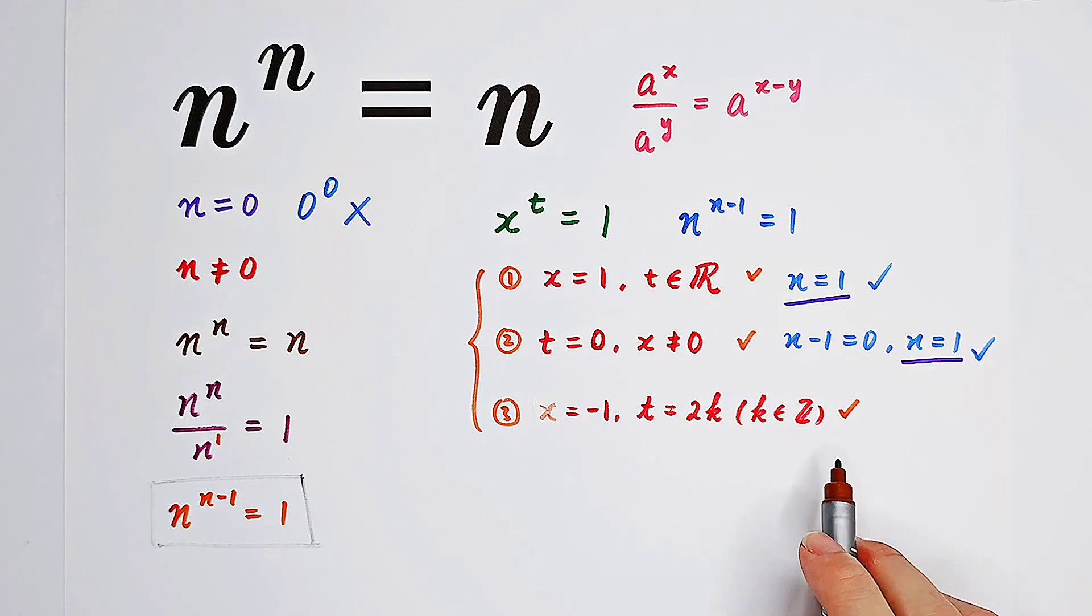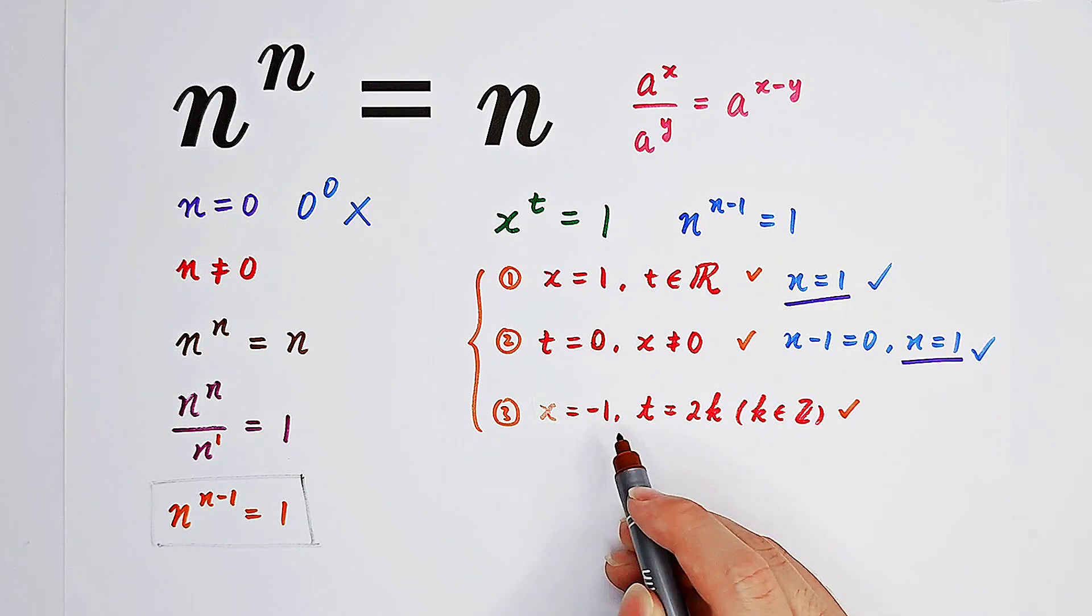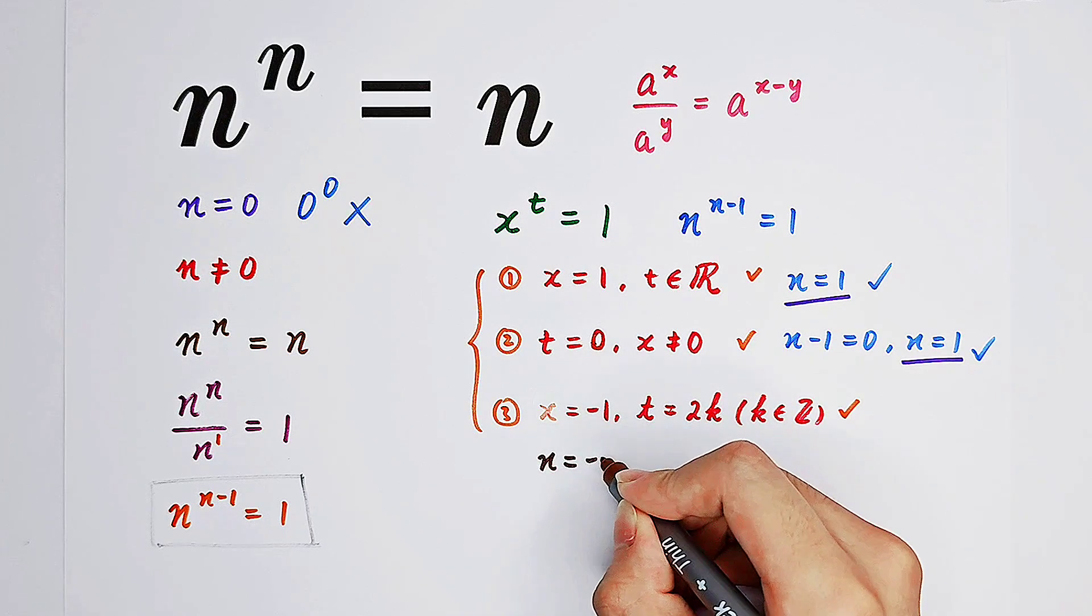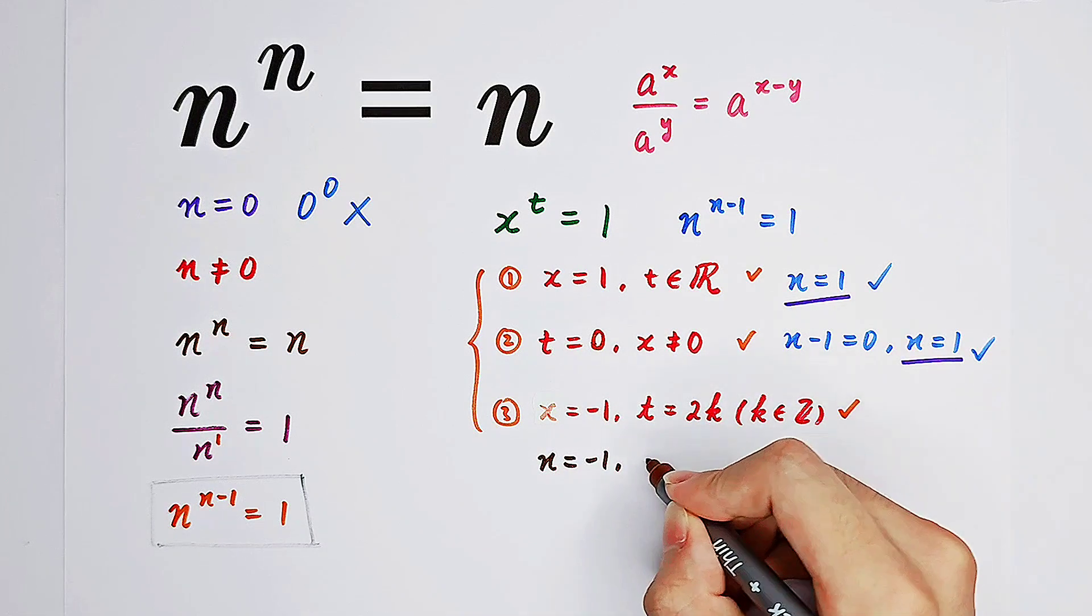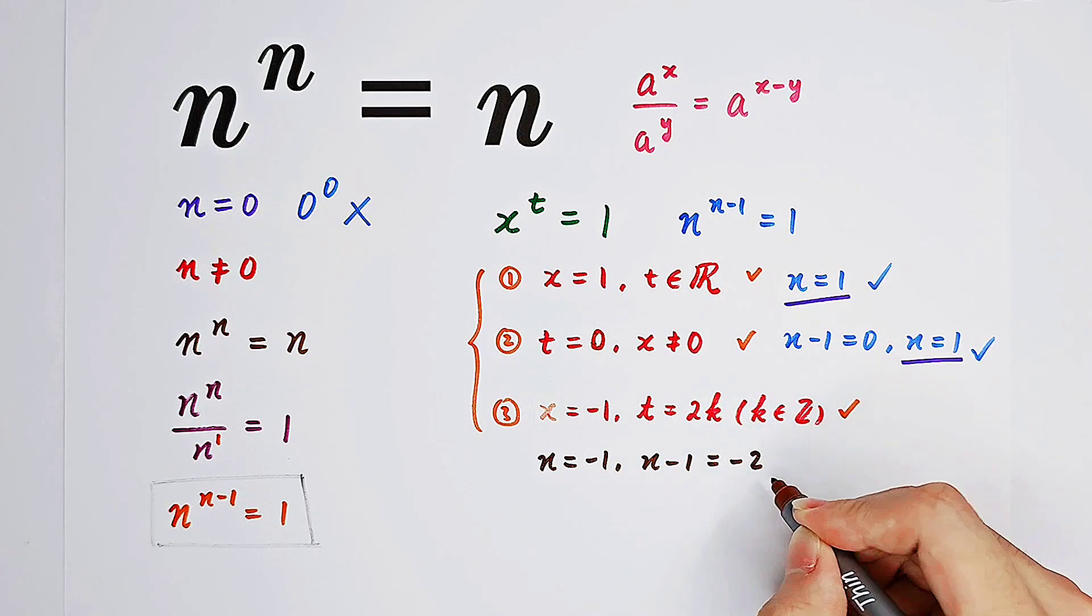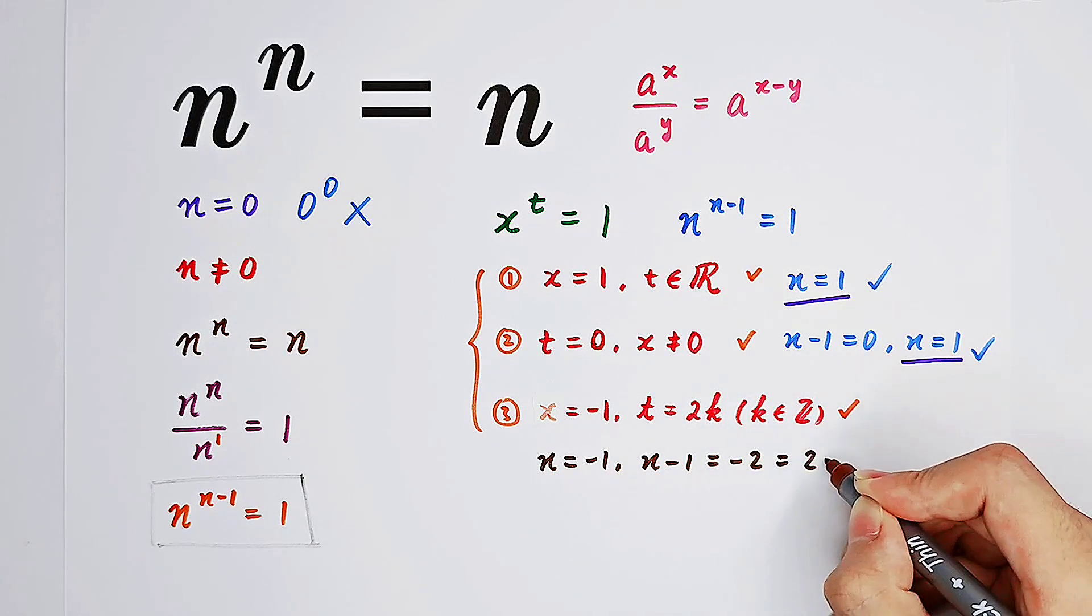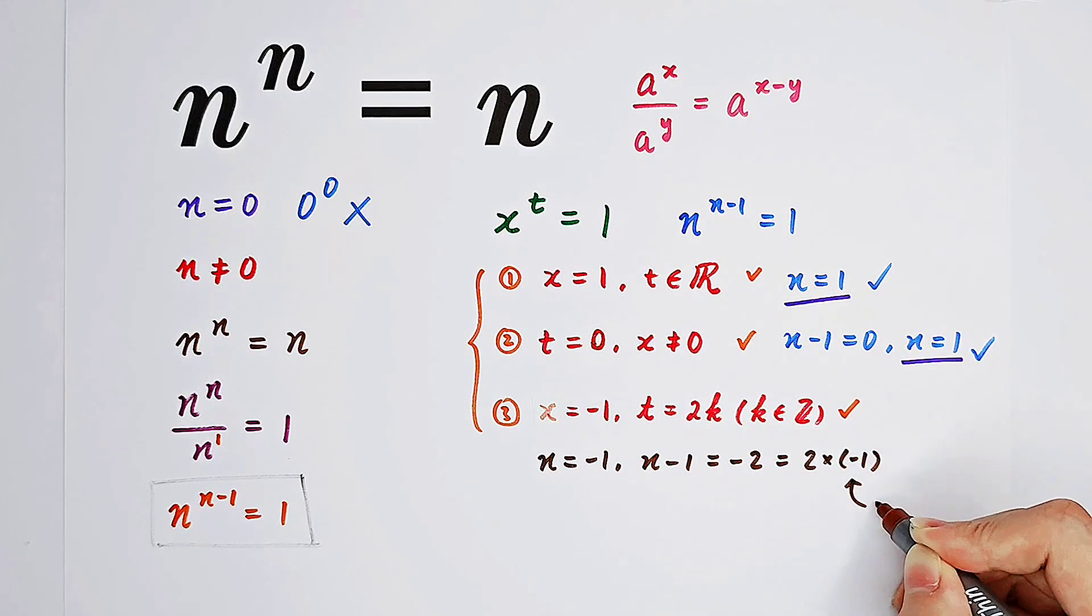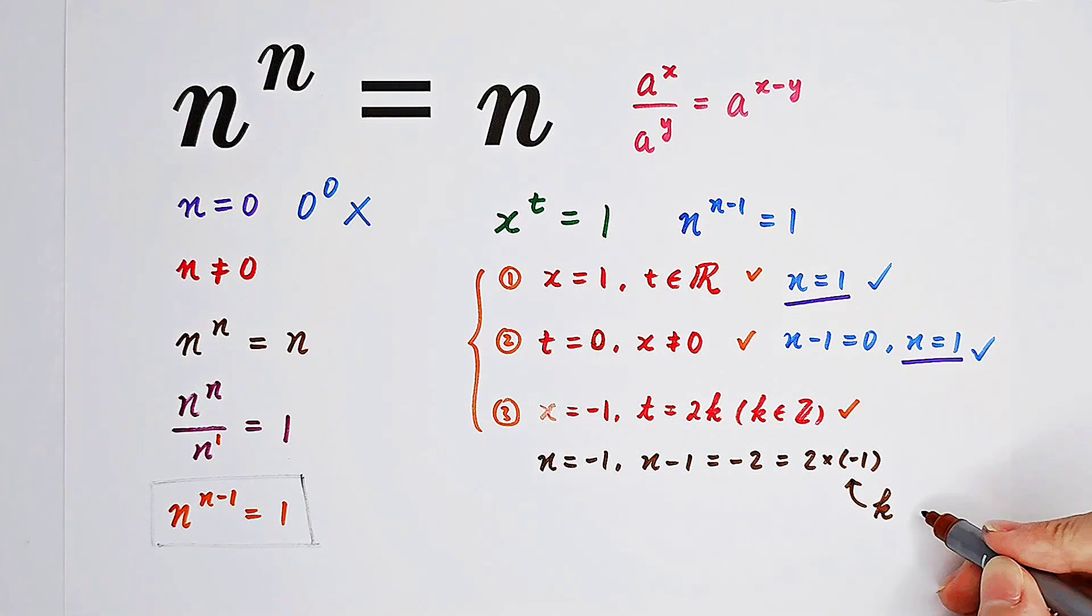For our third case, a little bit complicated. x equals negative 1. So here we have n equals negative 1. And of course, n minus 1 should be negative 1 minus 1, which is negative 2. And negative 2 is what? It's 2 times negative 1. And here we have our k. Our k is negative 1. So that means when n equals negative 1, the equation also holds.